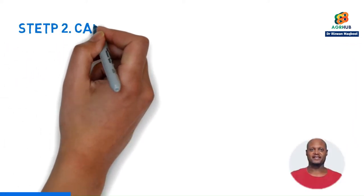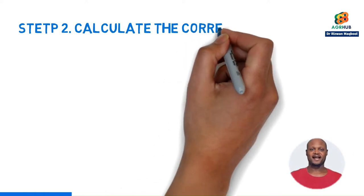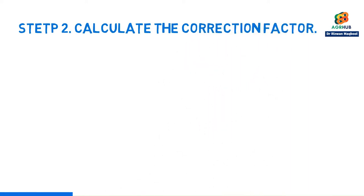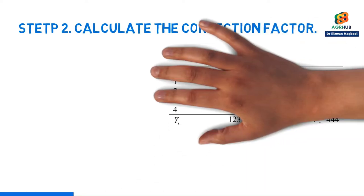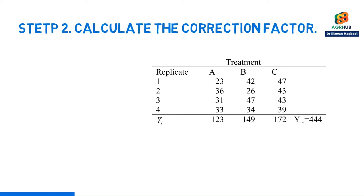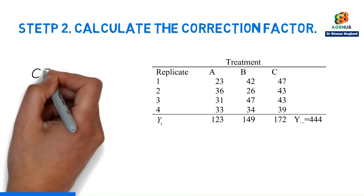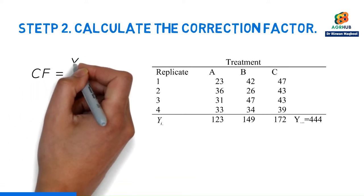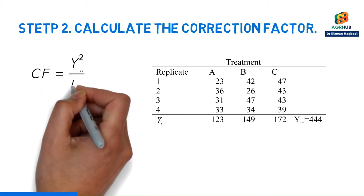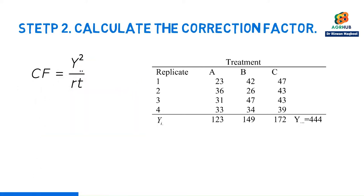Step 2. Calculate the correction factor. Now we're ready to do the data step for the problem. This step involves calculating something called the correction factor. To get this factor, we need to add all the values in the table, which we'll call Y, and then square that total and divide it by the total sample size.